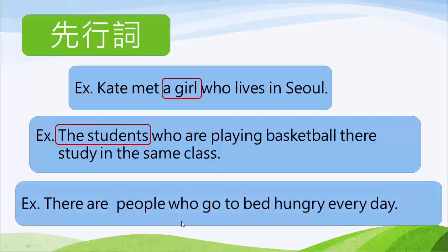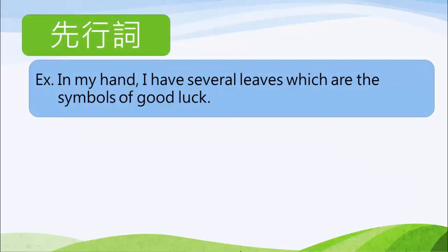第三句：There are people who go to bed hungry everyday. 有一些人，什麼樣的人？Who go to bed hungry everyday 是一個關代子句，people 就是先行詞。然後有關於事物的部分：In my hand, I have several leaves which are the symbols of good luck. Which are the symbols of good luck 修飾 several leaves，所以 several leaves 就是先行詞。